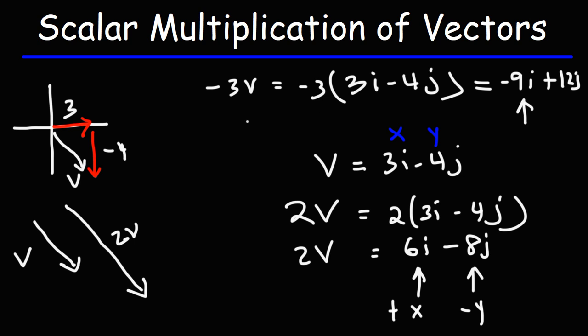Now, because we multiplied V by a negative value, x is now negative, y is positive. So what's going to happen is, the vector is going to change direction. So it's going to be three times long, but because of the negative sign, it's going to go in the opposite direction. So that is negative 3V.